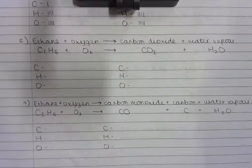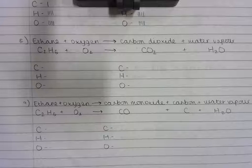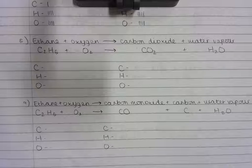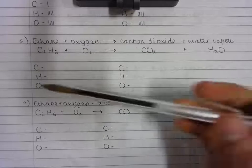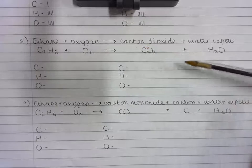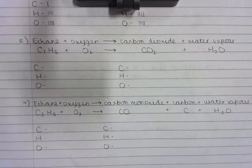This is chemical equation video number seven. I have completed the first three steps in pen: I have written the word equation, the chemical equation, and written out the chemical symbols for the atoms that react in the reaction on the reactant and product side of the equation.